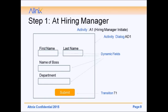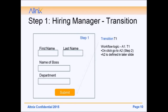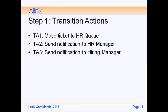Breaking it down: Step 1 is at the hiring manager level — this is the first activity. The hiring manager initiates this by entering the first name, last name of the employee, name of the boss, and the department, then hits the submit button. This is Activity Dialogue ID 1. The submit button triggers Transition T1, which takes the user to the next activity A2. At the backend, TA1 moves the ticket to the HR queue, TA2 sends a notification to the HR manager, and TA3 sends a notification to the hiring manager.